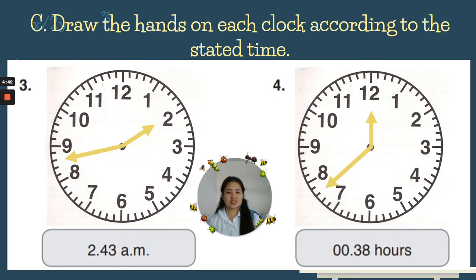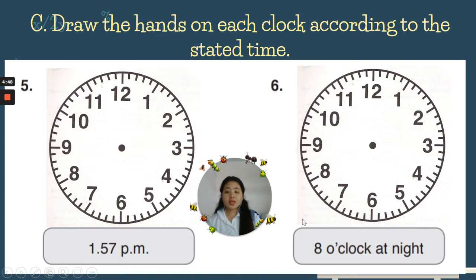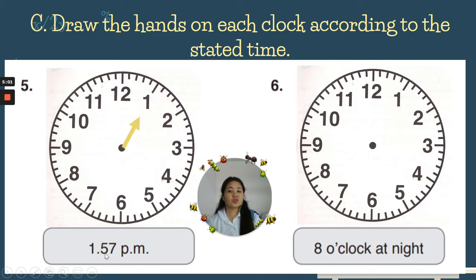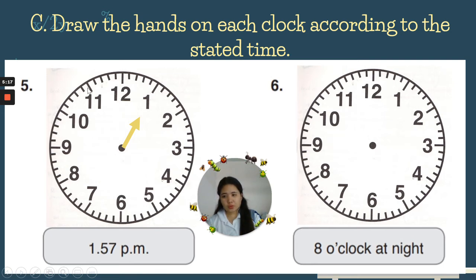Number five: 1:57 PM. The hour is one, so the small hand points at one. The minutes is 57 — five, ten, fifteen, twenty, twenty-five, thirty, thirty-five, forty, forty-five, fifty, fifty-five, fifty-six, fifty-seven. That is the time one fifty-seven PM.